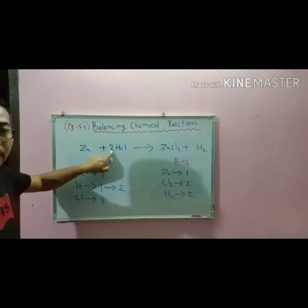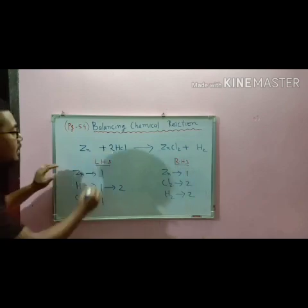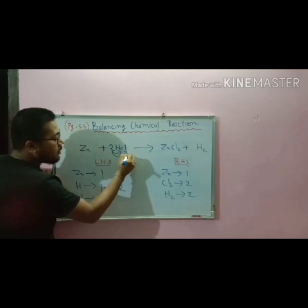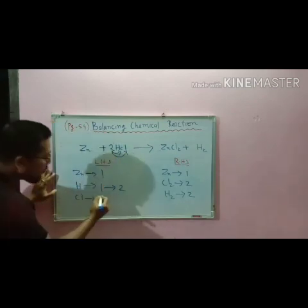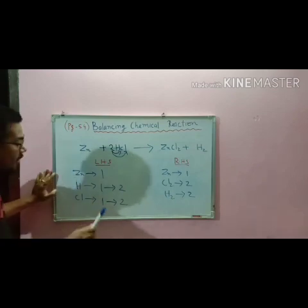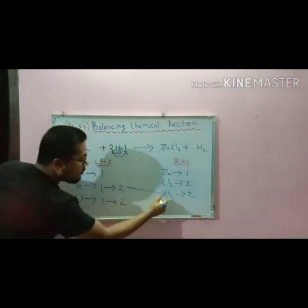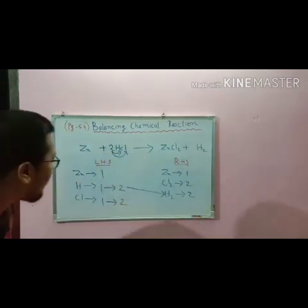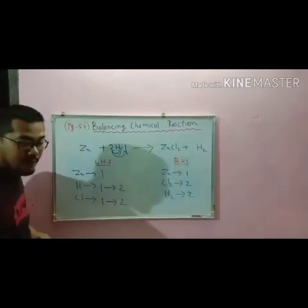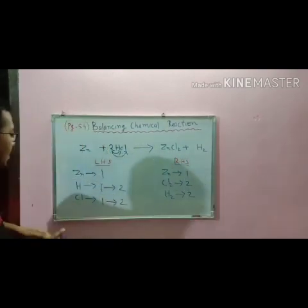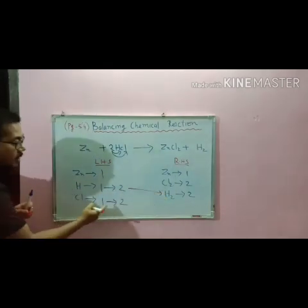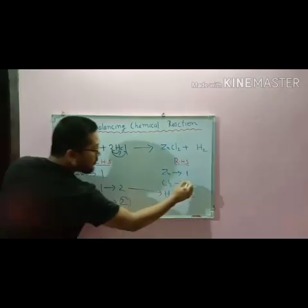Now, when I write two over here, this two is for hydrogen also and for chlorine also. That means our chlorine will also become two. Now you can see hydrogen is balanced as well as chlorine: two on LHS and two on RHS.